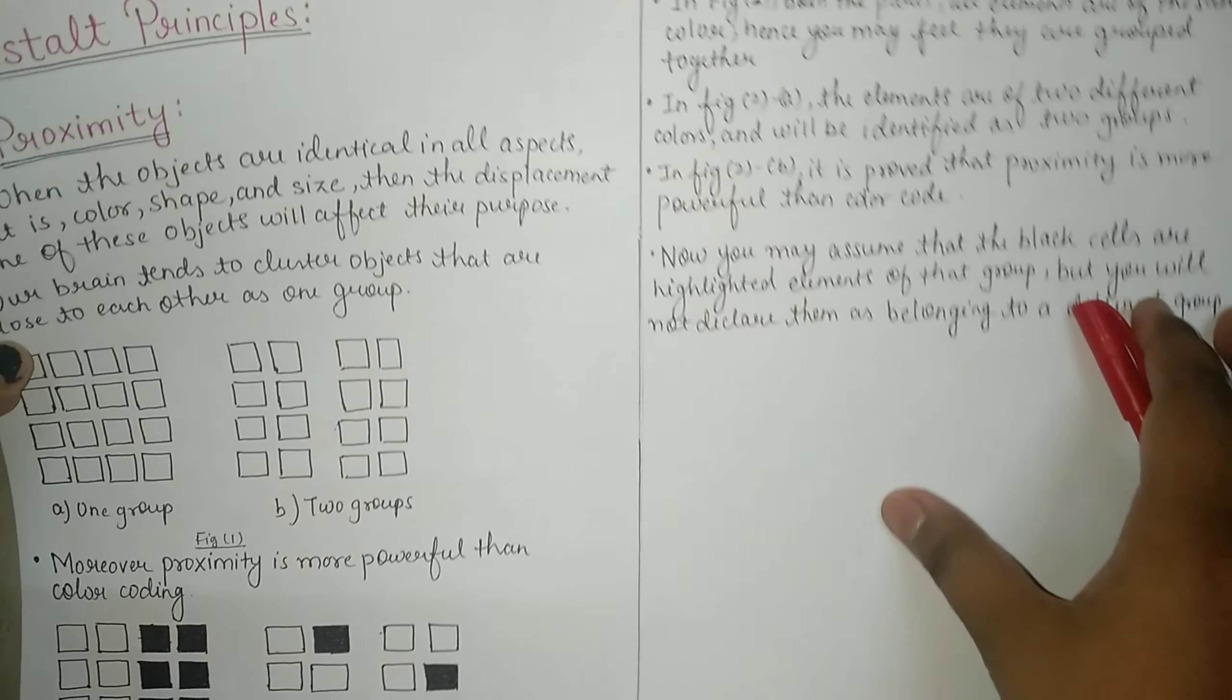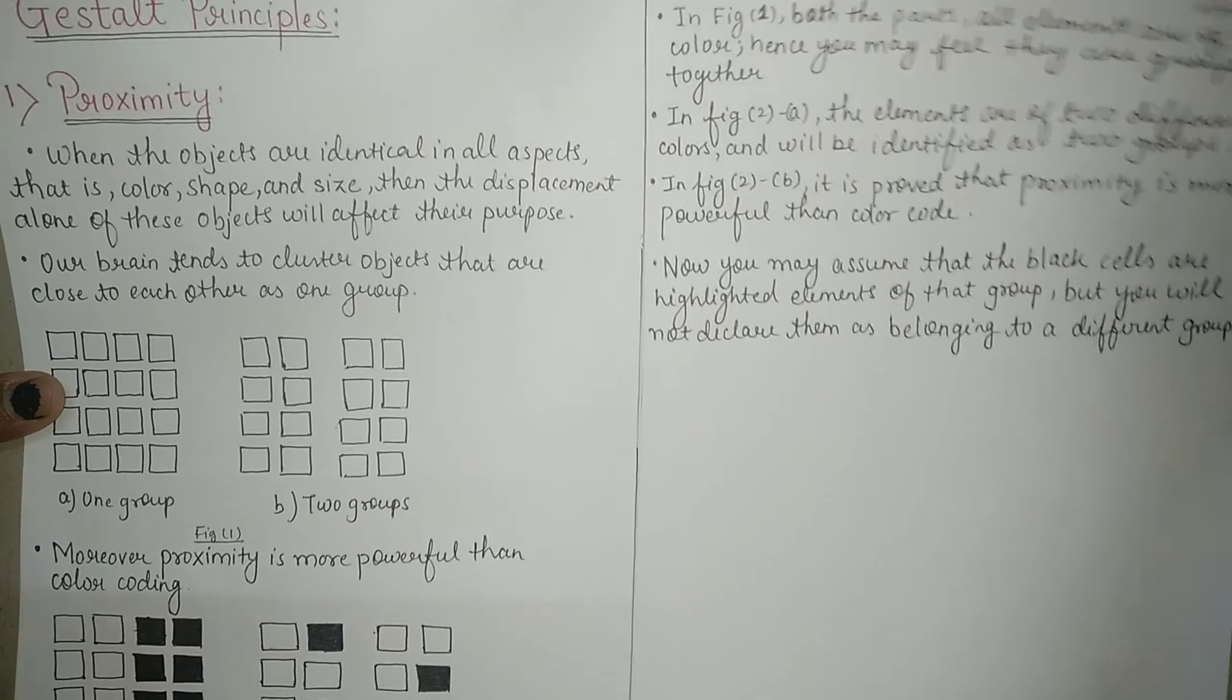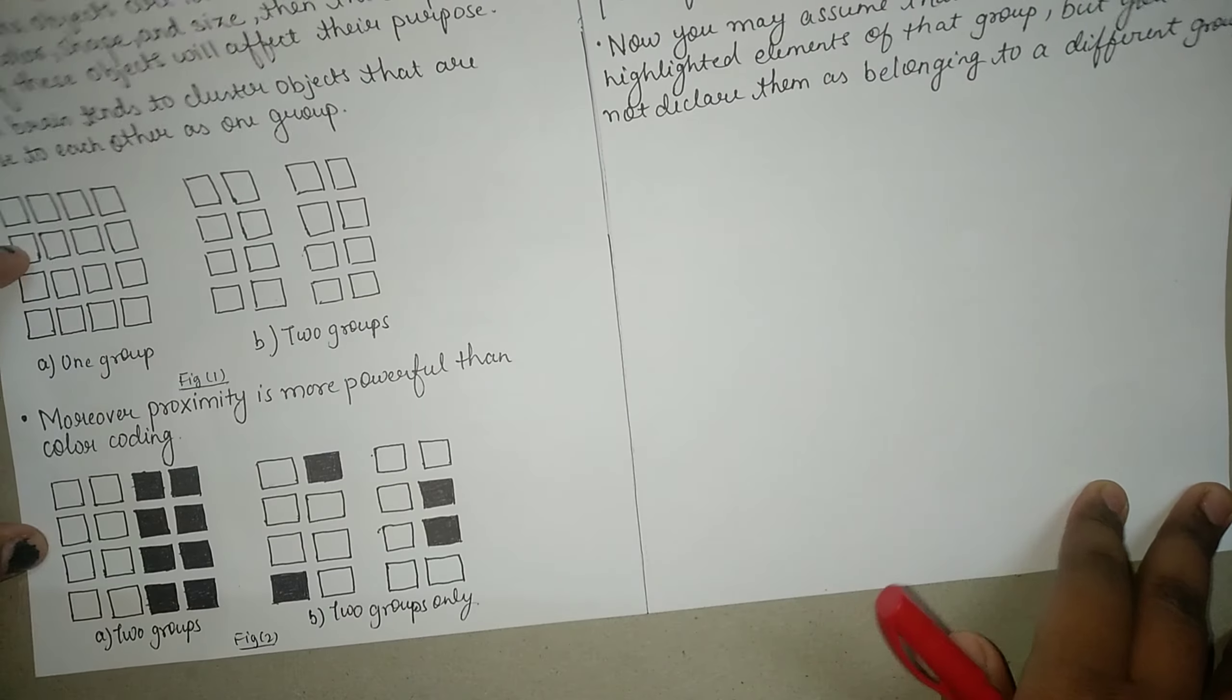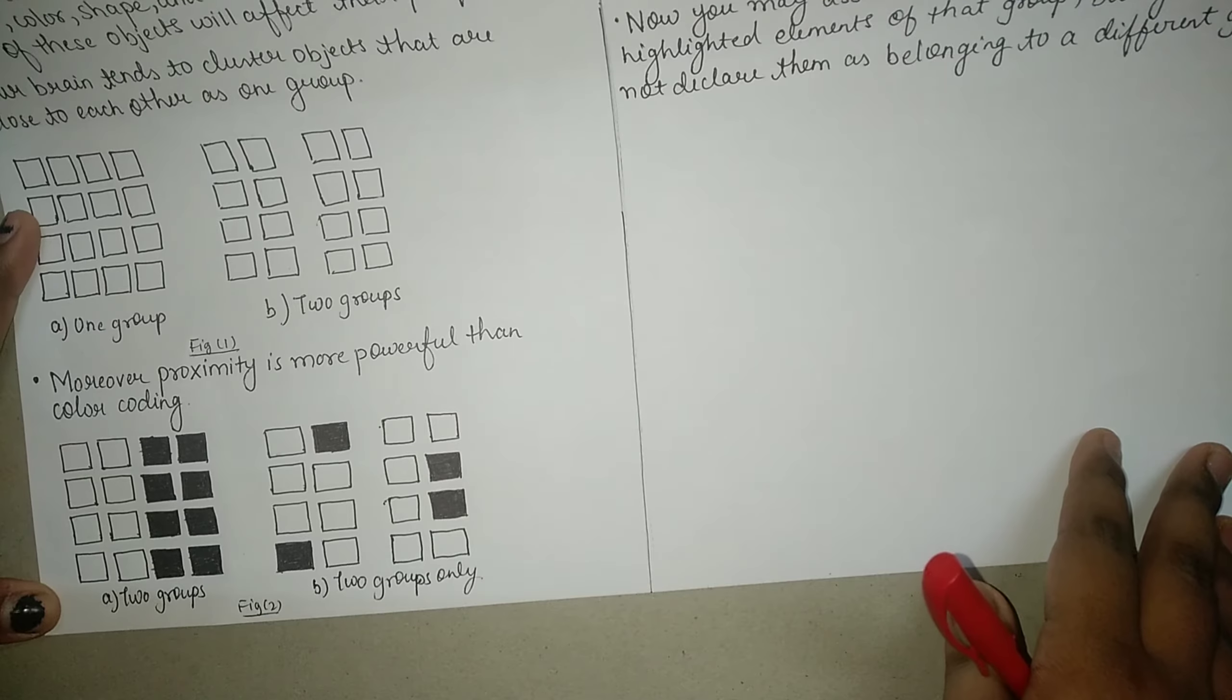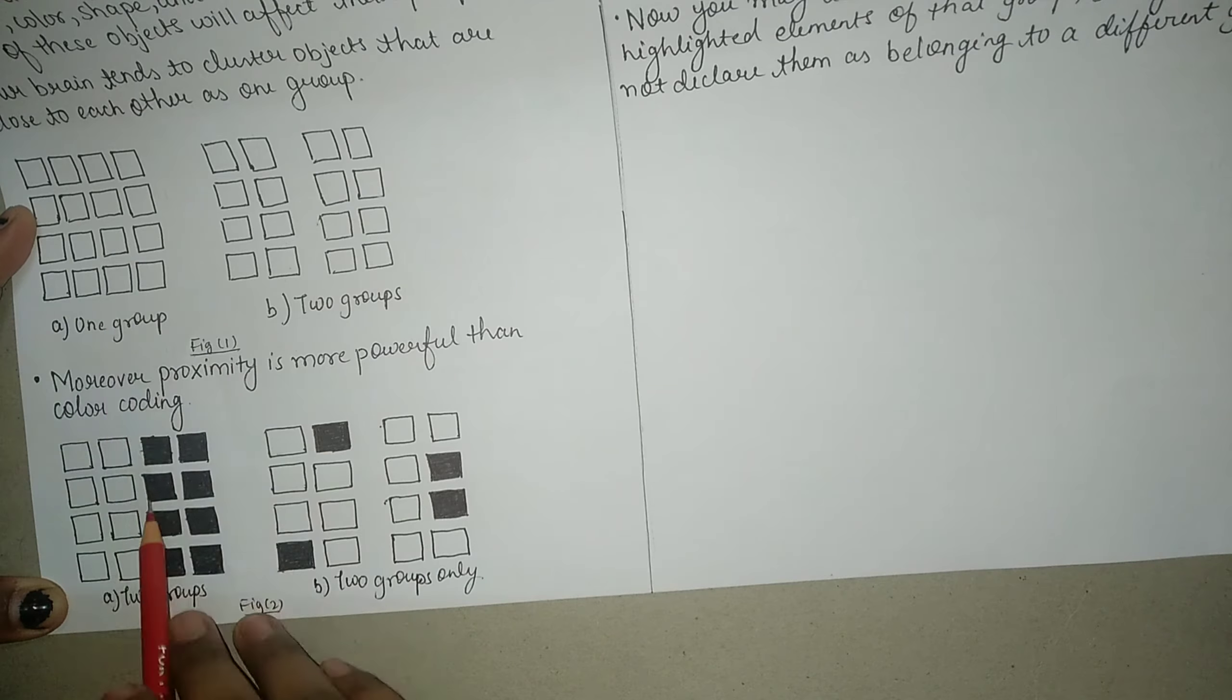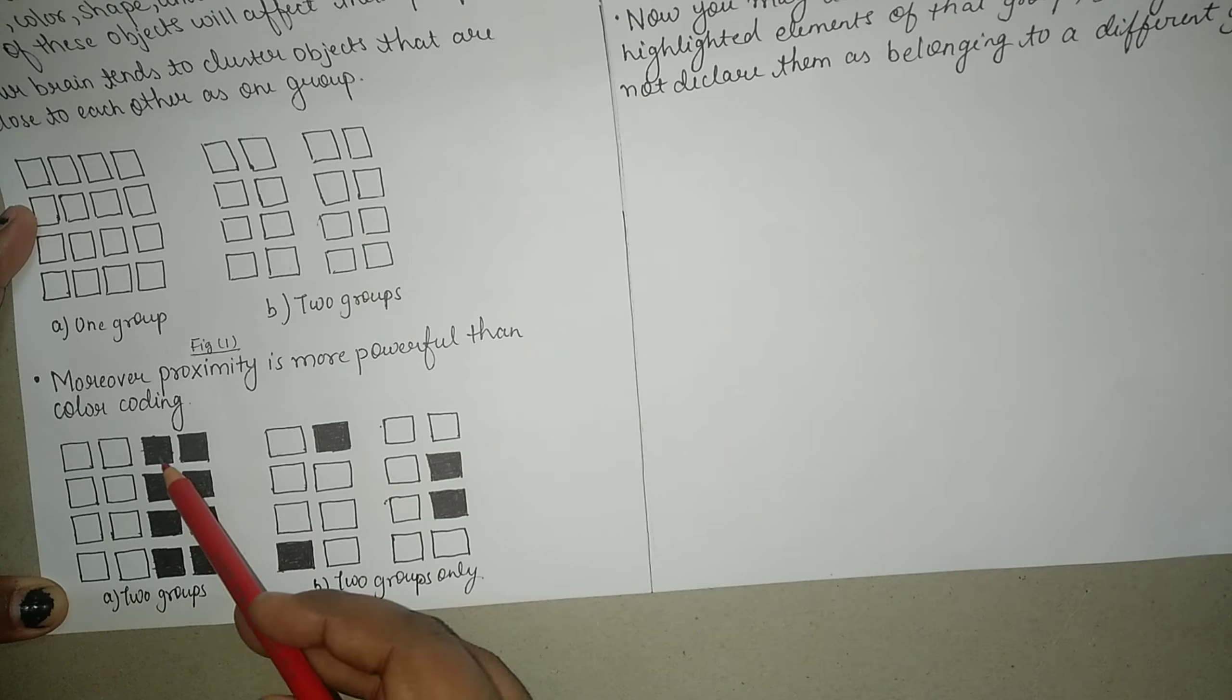Moreover, proximity is more powerful than color coding. So what did they do? The color code is completely white and completely black.